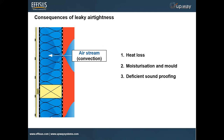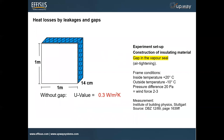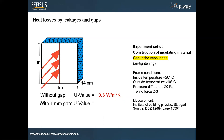The third consequence would be deficient soundproofing — if you don't fully isolate your inside space, you'll have deficient soundproofing. The University of Stuttgart, Institute of Building Physics, did an experiment: they measured a block of one meter by one meter, 14 centimeters thick. Without a gap, you'd have a U-value of 0.3. With just a one millimeter gap, the U-value would increase to 1.44 — bringing the performance of your facade down by a factor of 44.8. The importance of not having a gap is really very high.